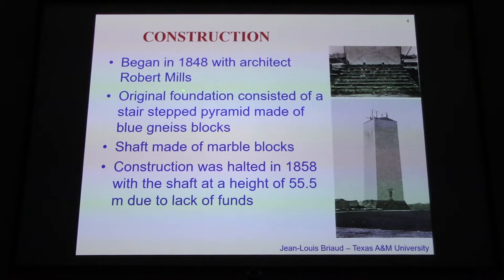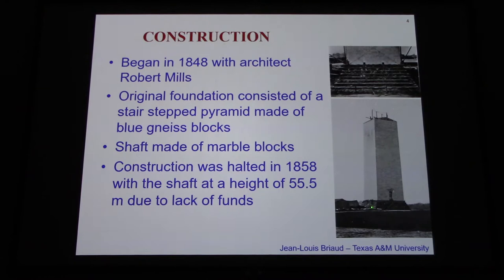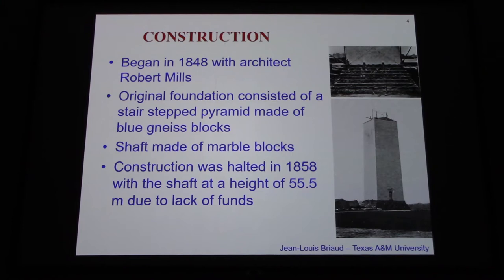It began in 1848 with architect Robert Mills. The foundation at the time was a very simple pyramid, just placed on the ground surface. You can sense this looks pretty heavy for the size of the foundation, particularly considering that the soil is in the vicinity of the Potomac River — therefore relatively soft bank sediments. The original foundation was made of nice blocks; the shaft was made of marble blocks, very heavy. Construction was halted when the height had reached about 55 meters.